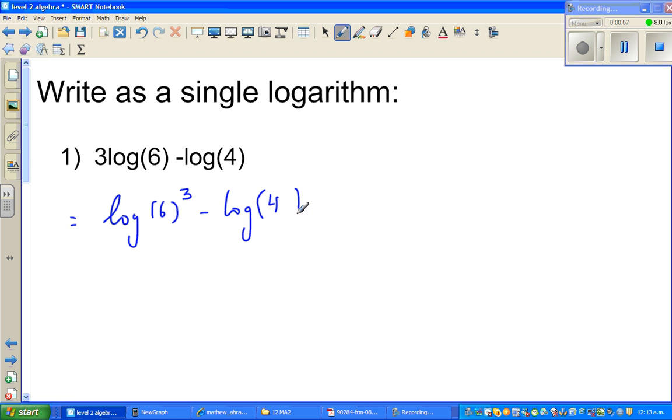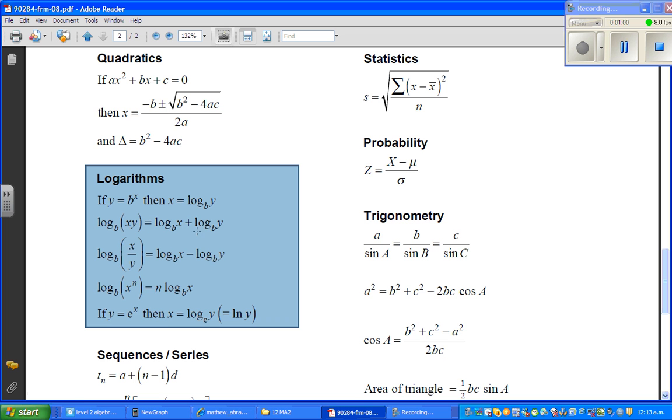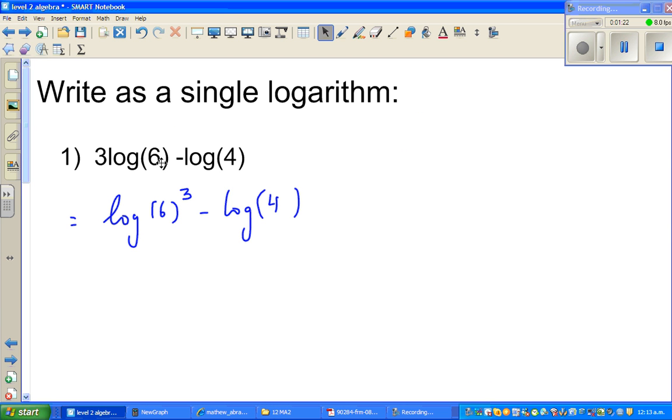Now which rule did I use? I use this rule. So n log x, don't worry about the base, the base should be the same. So you can read the log backwards like this. N log x is same as log of x to the power n. So, coming back to the question, 3 log 6 is log of 6 to the power 3.